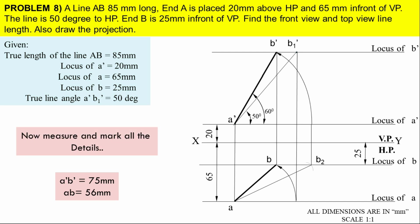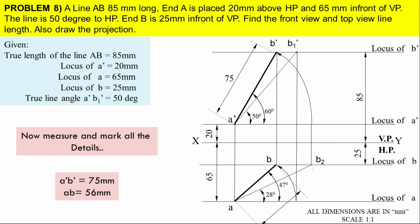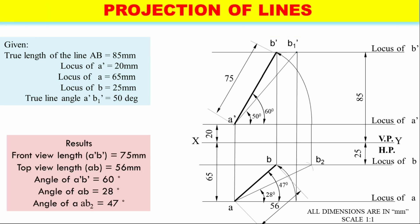With the help of protractor and scale, measure the angle and length of the line. The front view true line angle is 50 degrees and the apparent line angle is 60 degrees. The top view apparent line angle is 47 degrees and the top view true line angle is 28 degrees. Also note the locus detail: the other end point B' is 85 mm above HP. The front view apparent line length is 75 mm and the top view apparent line length is 56 mm. At the end, give a heading 'Projection of Lines' and note at the bottom that all dimensions are in mm and scale is 1:1.